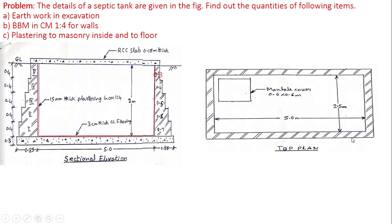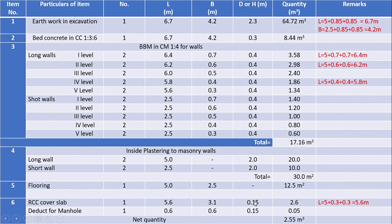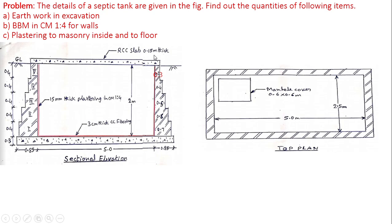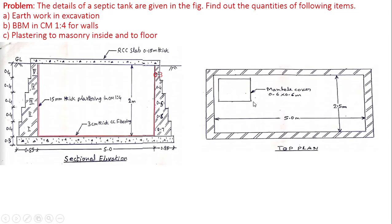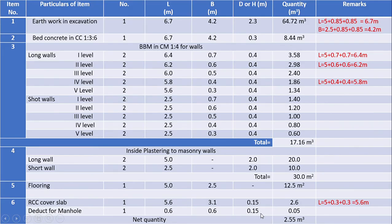Thickness of slab is given as 0.15 meters. Deduction for manhole of size 0.6 meter into 0.6 meter for the slab thickness is done, and the net quantity of cover slab is found to be 2.6 minus 0.05, equal to 2.55 meter cube.